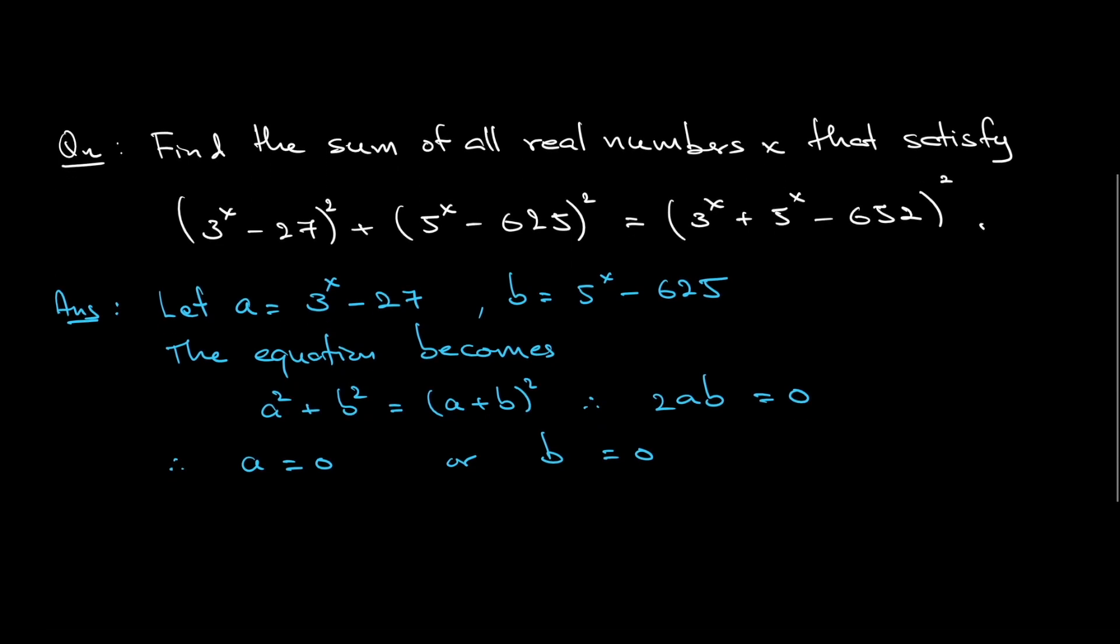Remember what our expression of a is: 3^x - 27 = 0. That means 3^x = 27, meaning x is log₃(27). So that is 3.